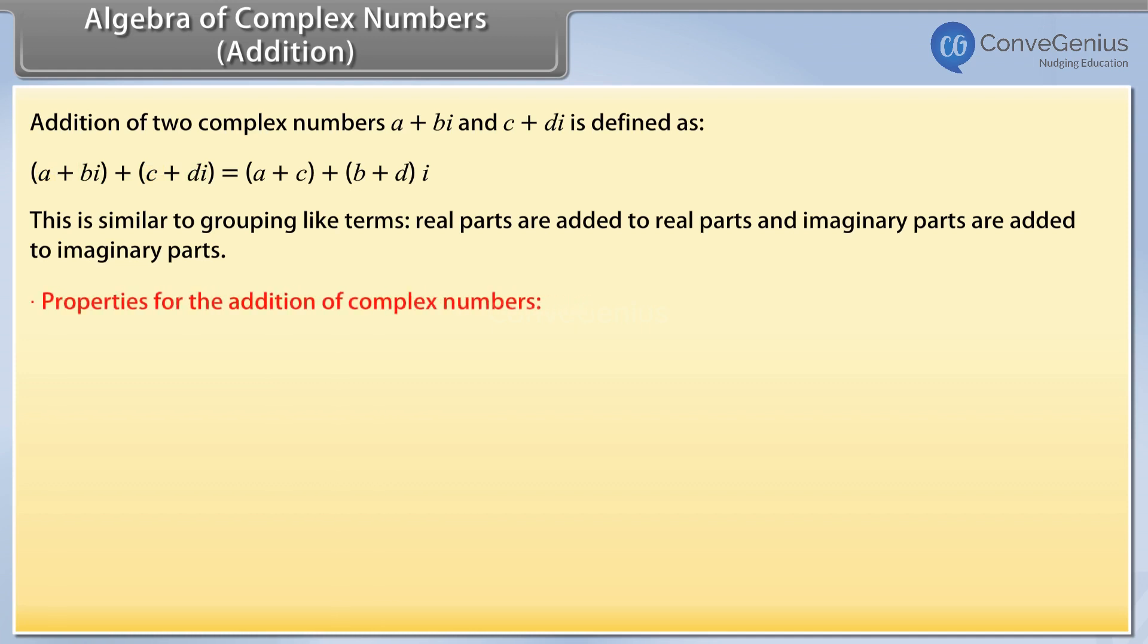Properties for the addition of complex numbers. The sum of two complex numbers is a complex number. This property is called closure law.